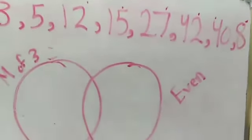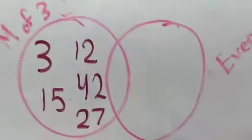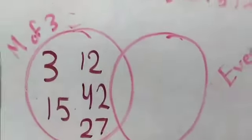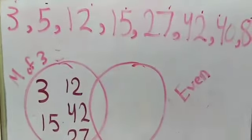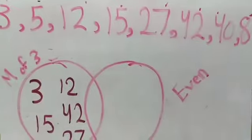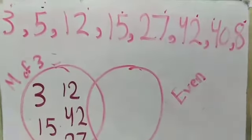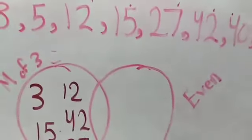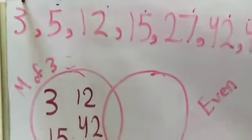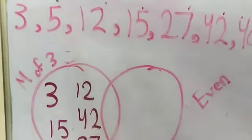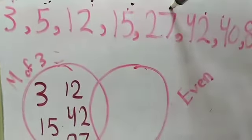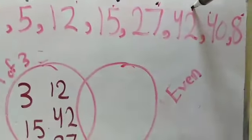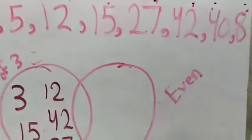Let's write down our answers for the multiples of 3, then continue with the second circle. We want to find the even numbers. Even numbers are the numbers that we can divide by 2 in equal amounts, like 2, 4, 6, 8, 10, and so on. So number 3 is not an even number, number 5 is not an even number, number 12 is an even number, number 15 is not even, 27 is not even, 42 is even, and 40 and 8 are also even numbers.